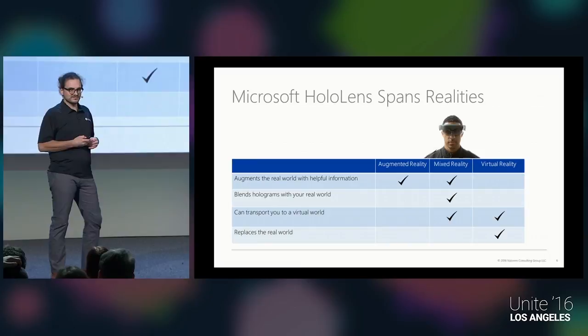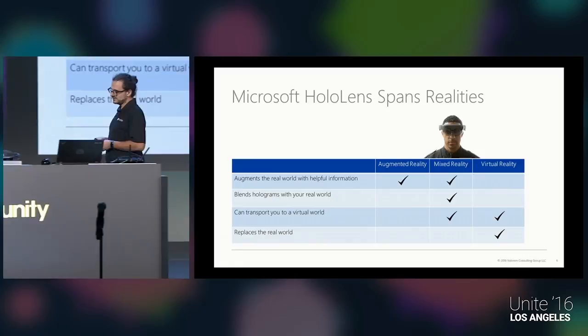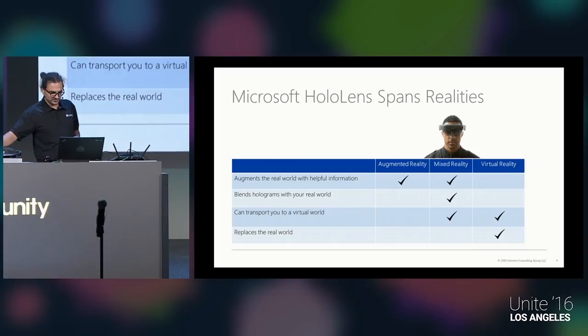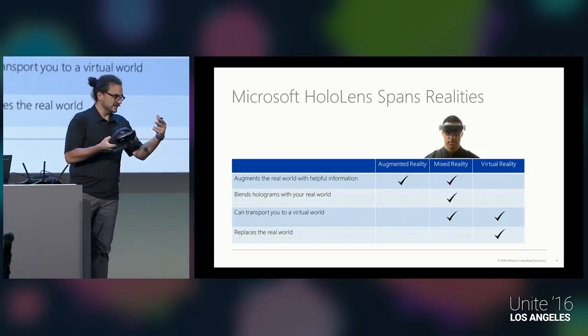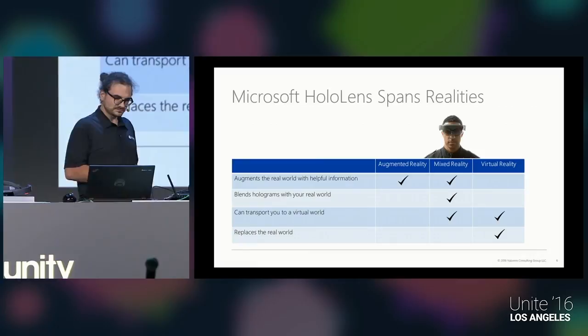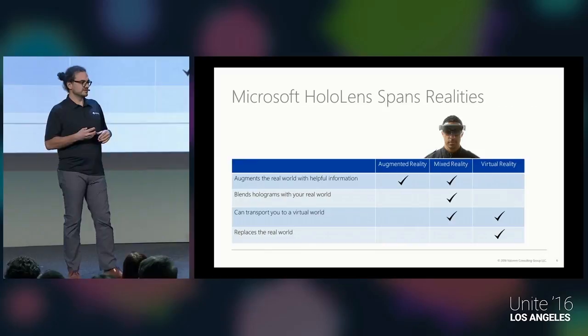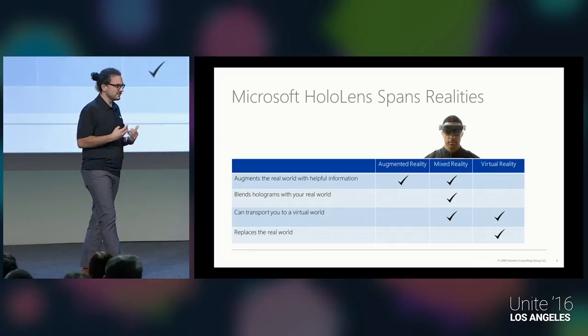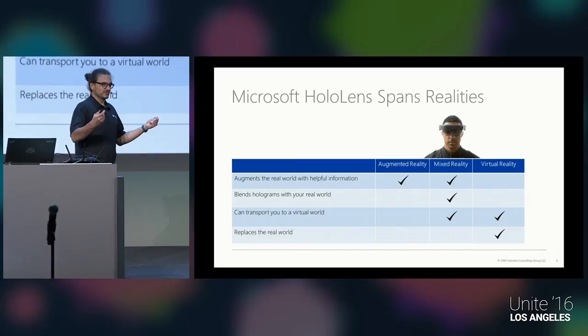The HoloLens is a so-called mixed reality head-mounted device, meaning it spans both. You augment your reality through its semi-transparent lenses, which fade in virtual objects so you see the real world with your own eyes — not through a camera stream like mobile AR. You also see blended-in holograms. But you can also be transported into a virtual world; there's a game called Fragments that transforms your room into a crime scene setting. That's why the HoloLens is called mixed reality — you can do both.